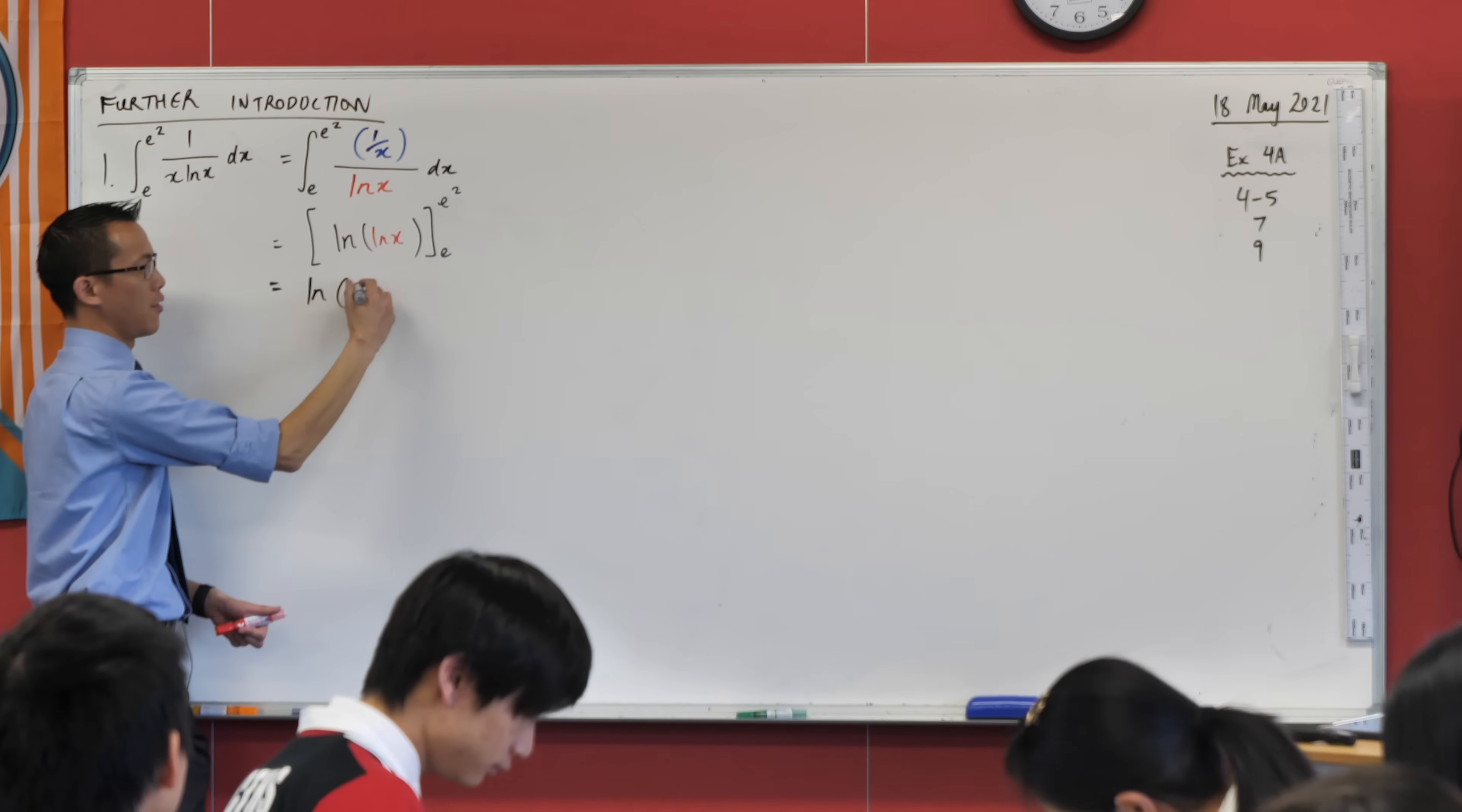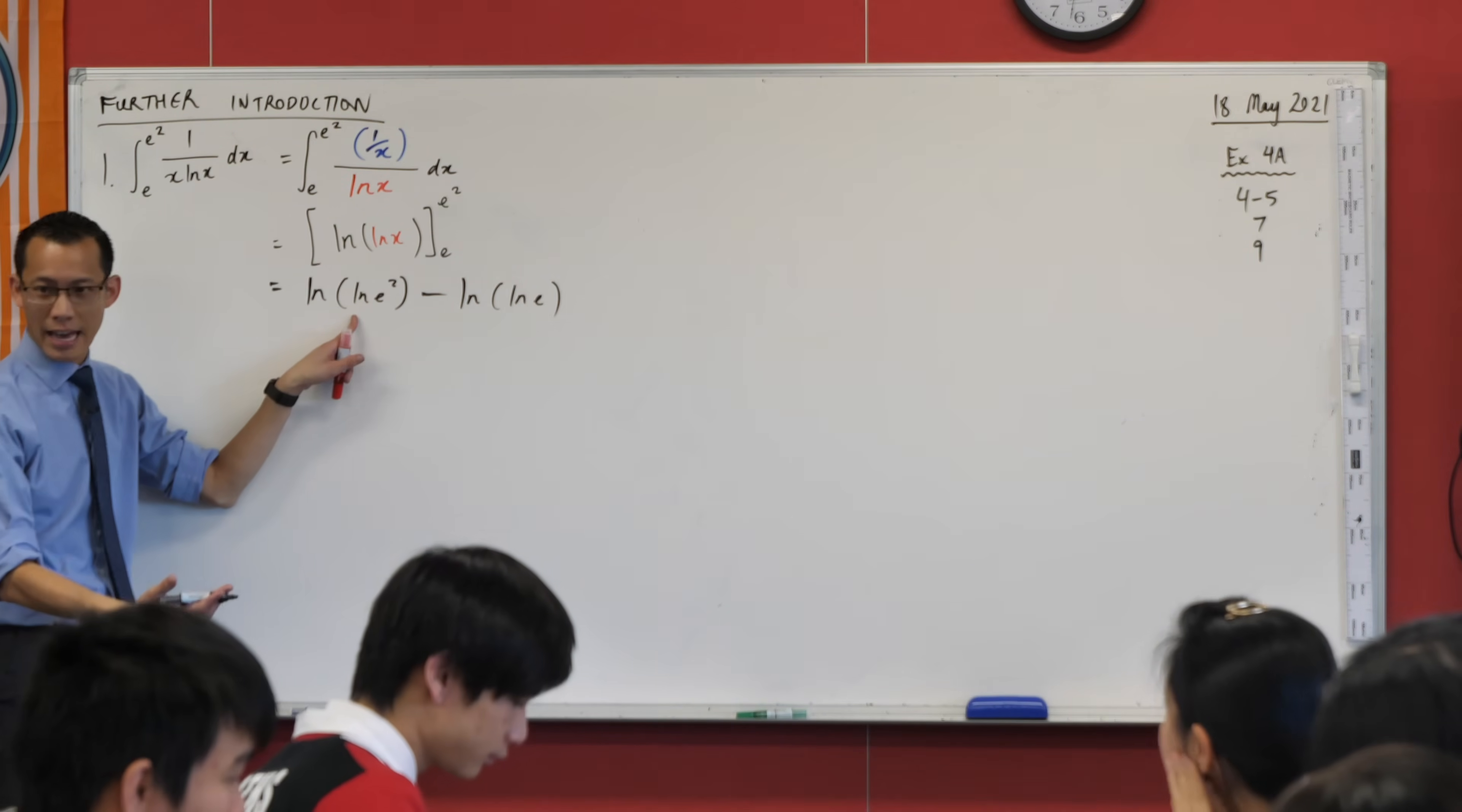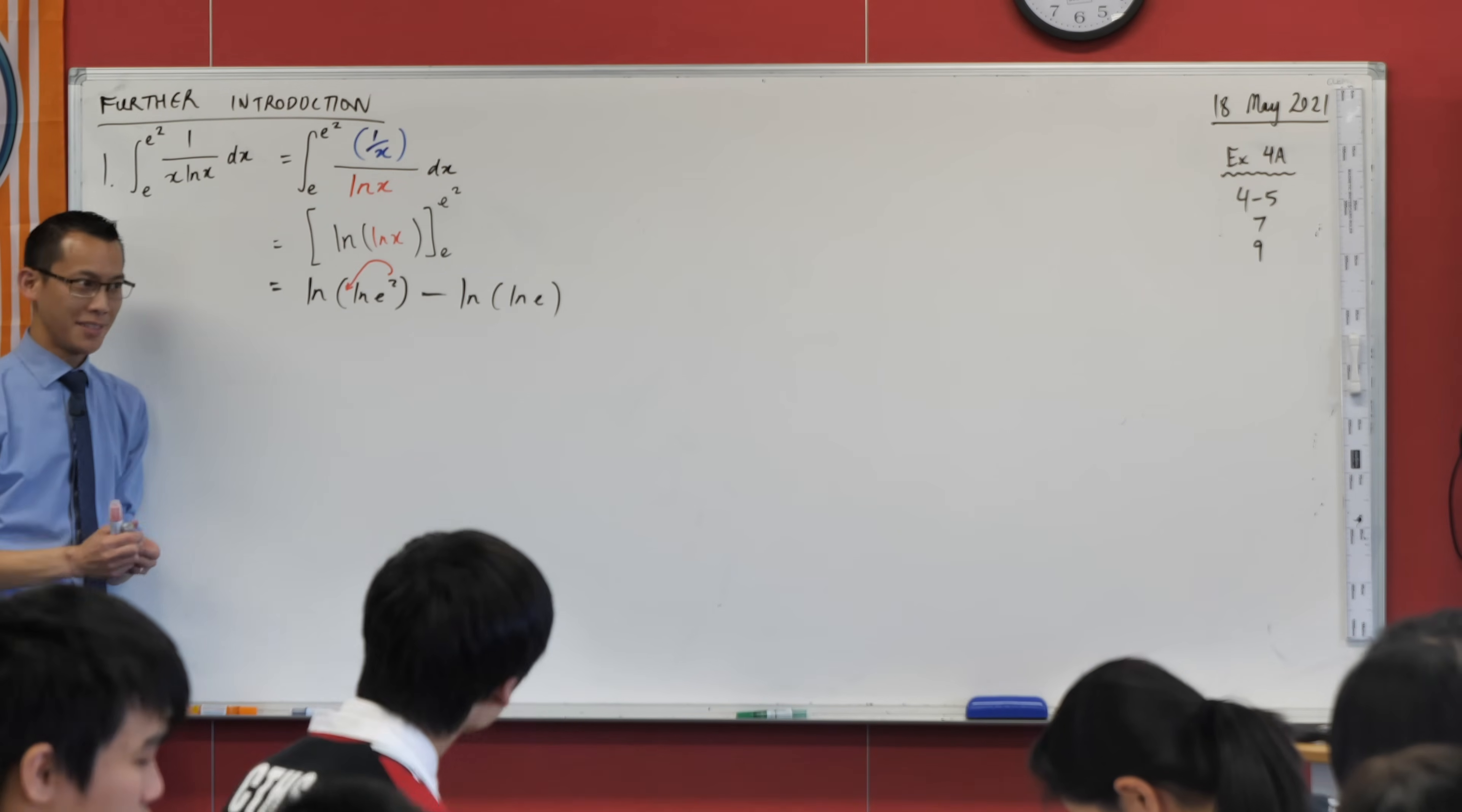I'll do one extra line for you. I'm going to get log of log of e squared, there's my upper bound. Then I'm going to subtract my lower bound, log of log e. What's log of e? That's one. What's log of one? That's zero. Over here, a very similar thing happening. I can take this power out here, make it a coefficient. So you're going to get log of 2 times 1, so you get log of 2.